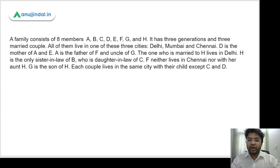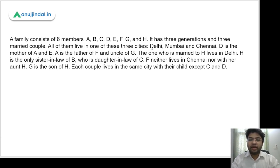T is the mother of A and E. A is the father of F and uncle of G. The one who is married to H lives in Delhi. H is the only sister-in-law of B, who is the daughter-in-law of C. F neither lives in Chennai nor with her aunt. G is the son of H. Each couple lives in the same city with their child, except C and D.